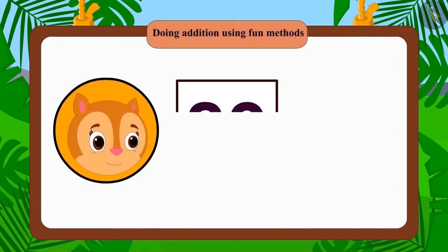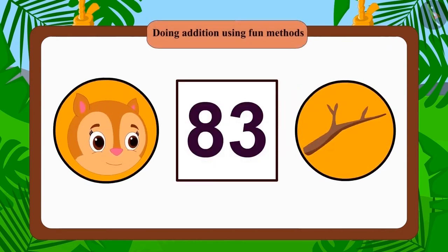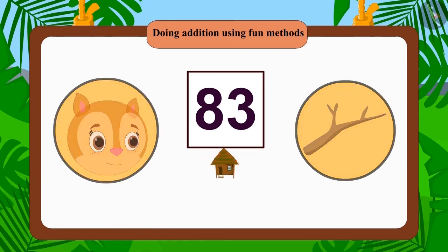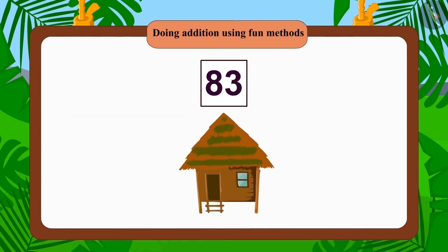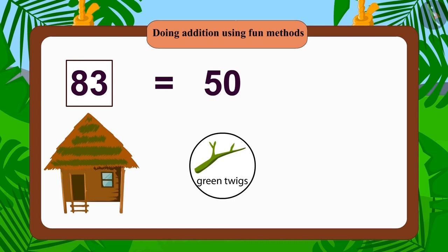Chanda collected 83 thin twigs for her house and built her own small house. She first used 50 green twigs and 33 brown twigs but Chanda did not like the design of the house.